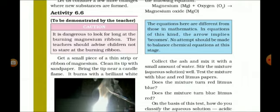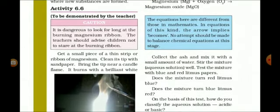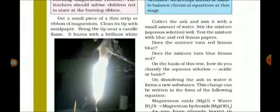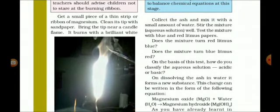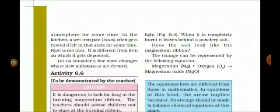An experiment is here and hopefully, we will do this experiment in our labs, in our school sometime. Get a small piece of a thin strip or ribbon of magnesium. A magnesium ribbon. Clean its tip with the sandpaper. Sandpaper is just like rough paper, which is used generally to clean up the objects. It is generally present in the lab, used to clean up the substances. Its surface is rough. Bring the tip near a candle flame. Now, we have to bring the tip of this magnesium ribbon near the candle flame. It burns with a brilliant white light.